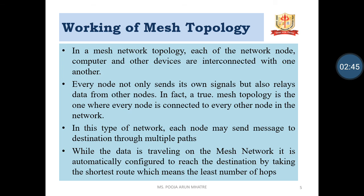Working of Mesh Topology: In a mesh network topology, each of the network nodes, computers, and other devices are interconnected with one another. Every node not only sends its own signal but also relays data from one node to another. A mesh topology is one where every node is connected to every other node in the network. In this type of network, each node may send a message to the destination through multiple paths. While data is traveling on the mesh network, it is automatically configured to reach the destination by taking the shortest route, which means the least number of hops.